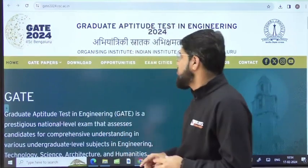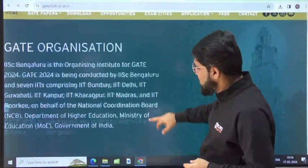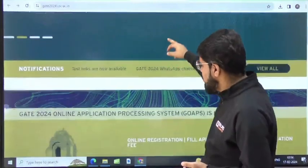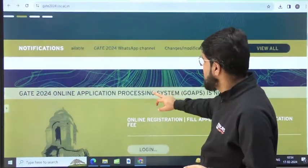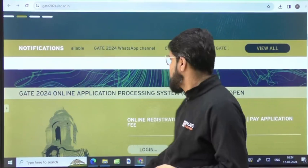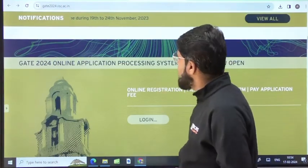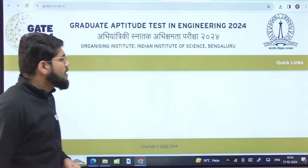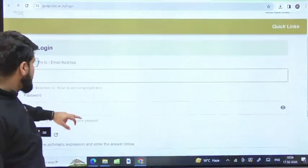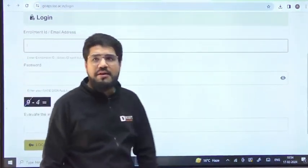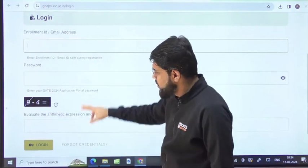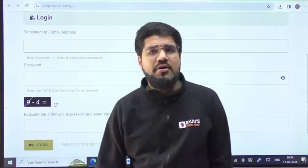This is the IISc website, but not exactly the website you have to go to. You need to go to GOAPS, the online application portal. What you have to do is start filling up your basic details - enter your email address or enrollment ID, password, and log in. After you log in, there will be an option to download your response key.